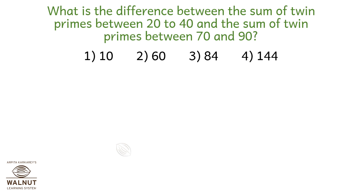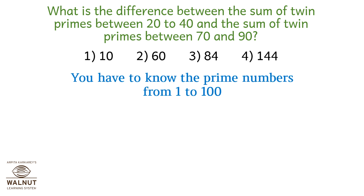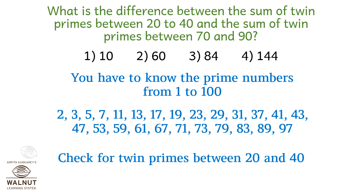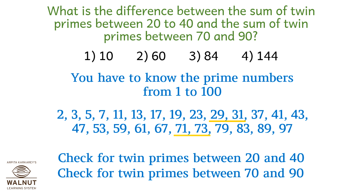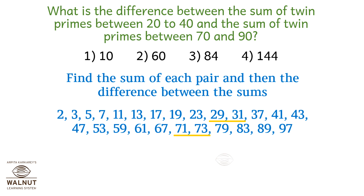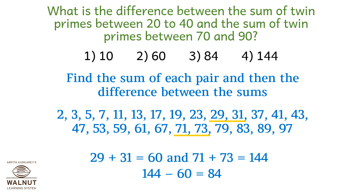What is the difference between the sum of twin primes between 20 and 40 and the sum of twin primes between 70 and 90? Twin primes between 20 and 40: 29 and 31. Twin primes between 70 and 90: 71 and 73. The sum of 29 plus 31 is 60; the sum of 71 plus 73 is 144. The difference is 84, which is option 3.